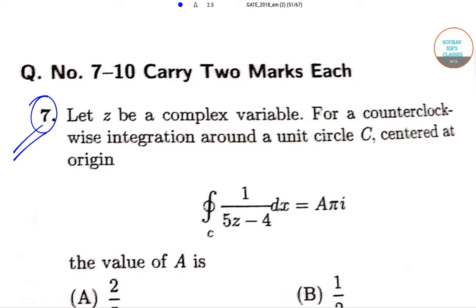In question number 7, it has been said that let z be a complex variable. Now for a counterclockwise integration around the unit circle C centered at origin, we need to find out the integration 1 by 5z minus 4 dz.